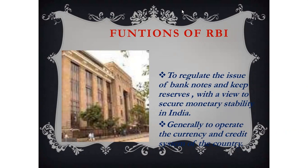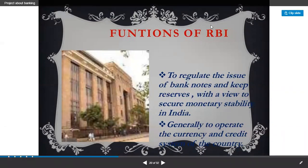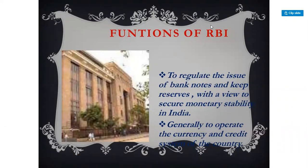The government-owned presses where notes are printed are located at Nasik in Western India and at Devas in Central India, where five rupee, ten rupee, fifty rupee, and hundred rupee notes are printed. Two more presses are at Mysuru and Salboni. Coins are minted at four locations maintained by the Government of India: Mumbai, Hyderabad, Kolkata, and Noida.